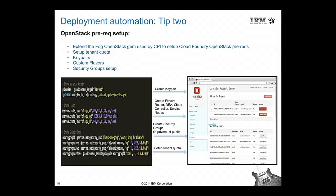Automation step two: since a vanilla install of OpenStack is not sufficient, we invested effort in customizing OpenStack environments using the fog gem. We are automatically creating key pairs, creating different flavors for routers, DEAs, and cloud controllers, creating security groups, and upping the tenant quota so it can absorb a Cloud Foundry deployment.